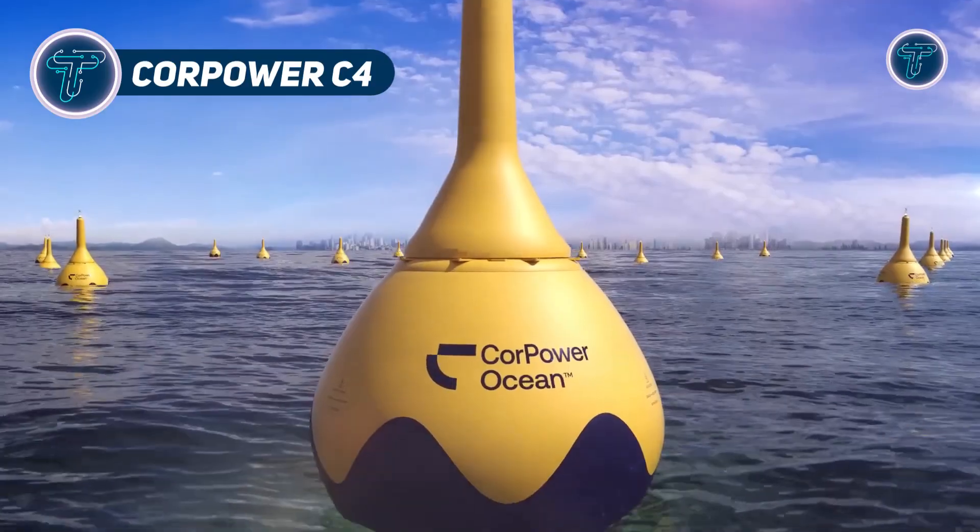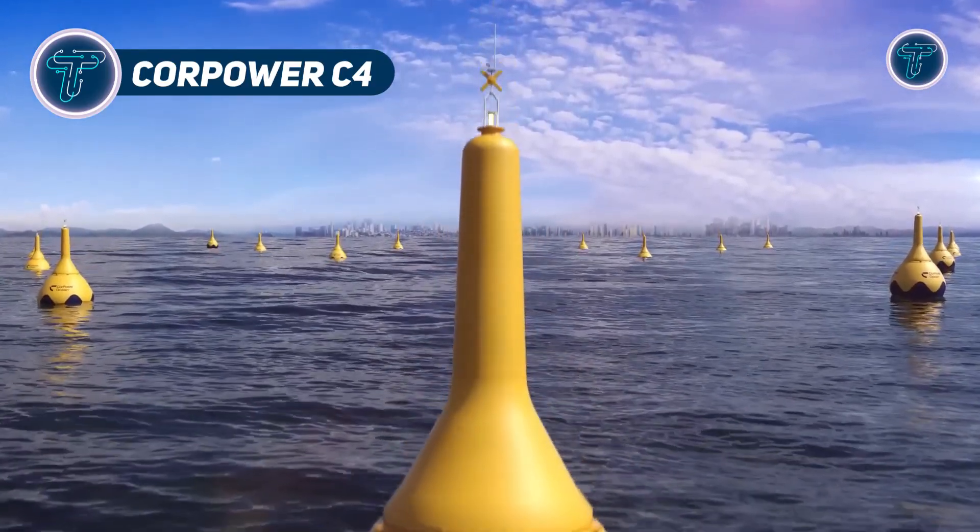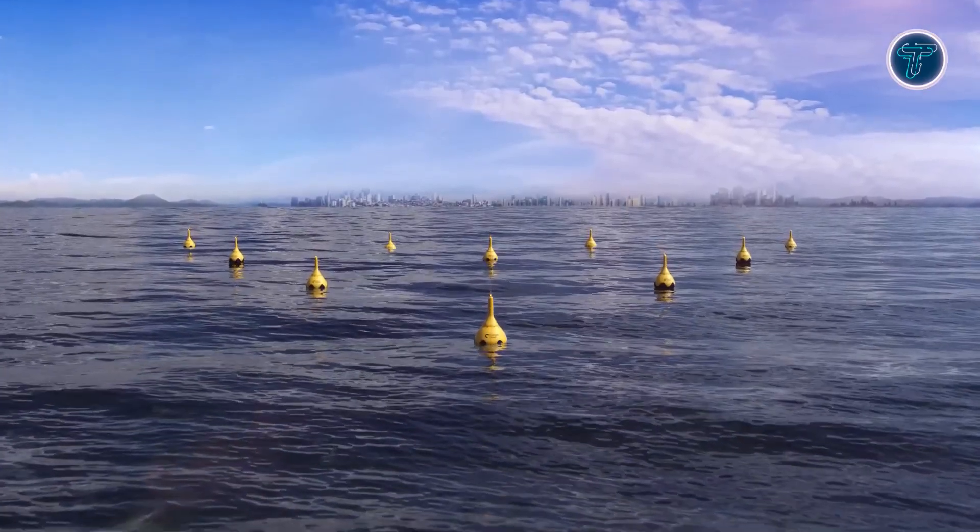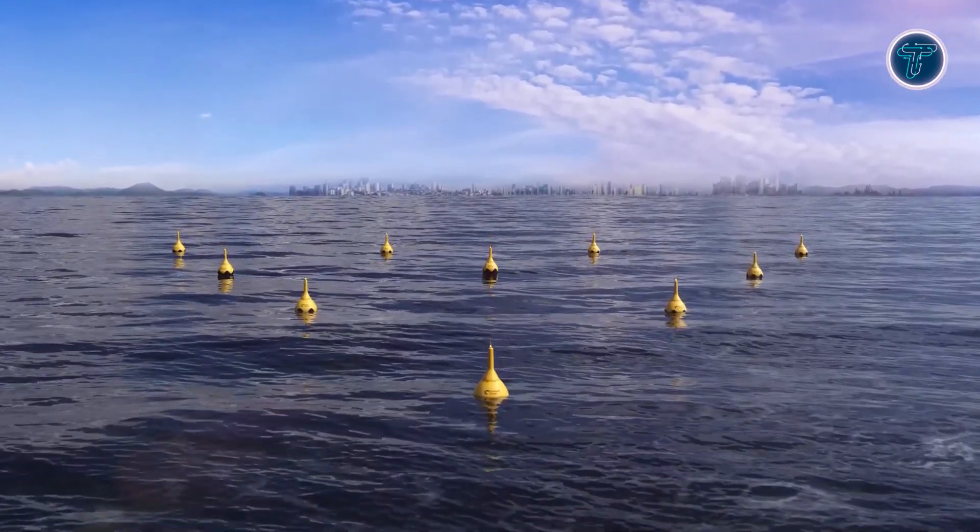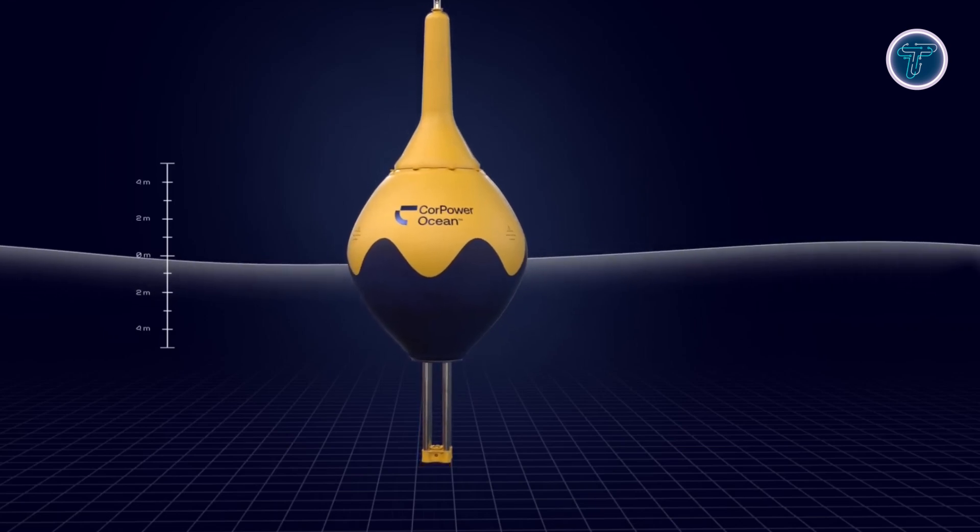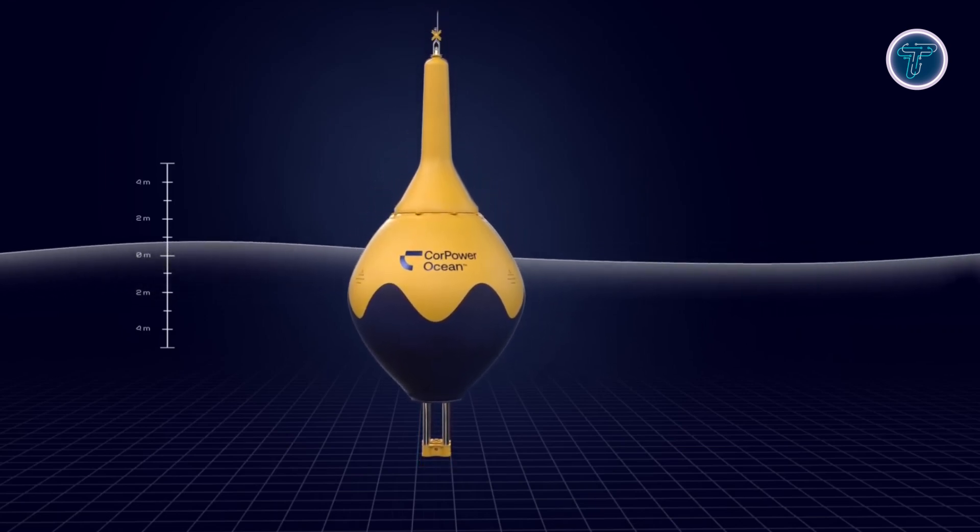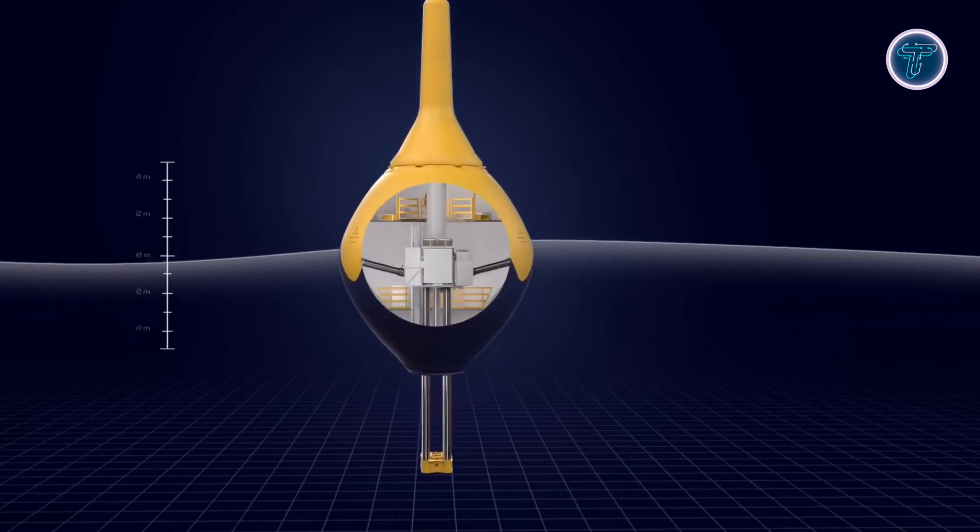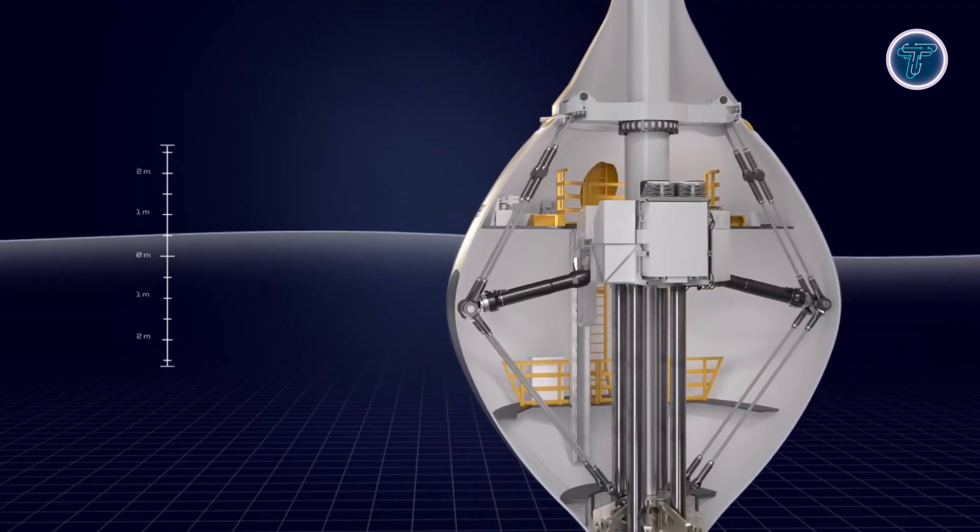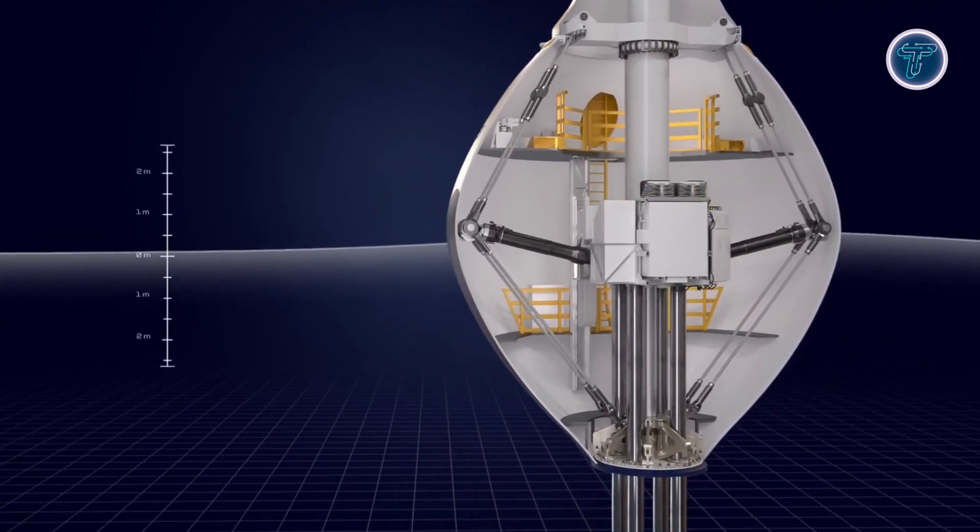CorePower C4. The CorePower C4 is an innovative wave energy converter designed to capture the ocean's relentless motion and turn it into clean electricity. This buoy-based system uses advanced wave spring phase control technology to tune itself to incoming waves, amplifying energy capture during normal sea conditions while safely detuning in extreme storms. Its unique design allows it to survive waves up to nearly 19 meters, proving both resilience and efficiency.